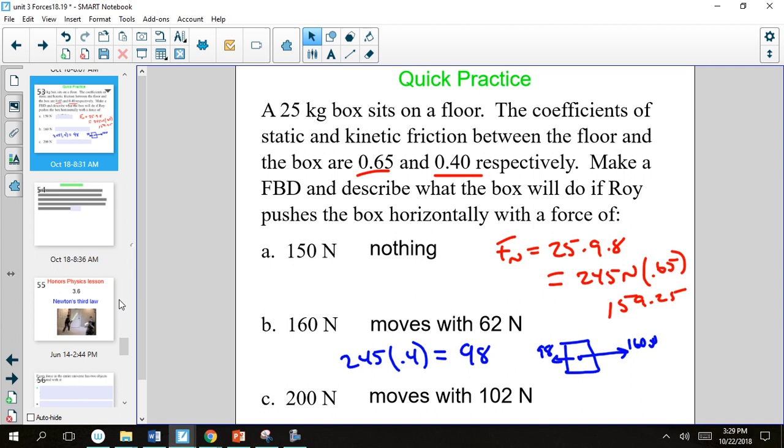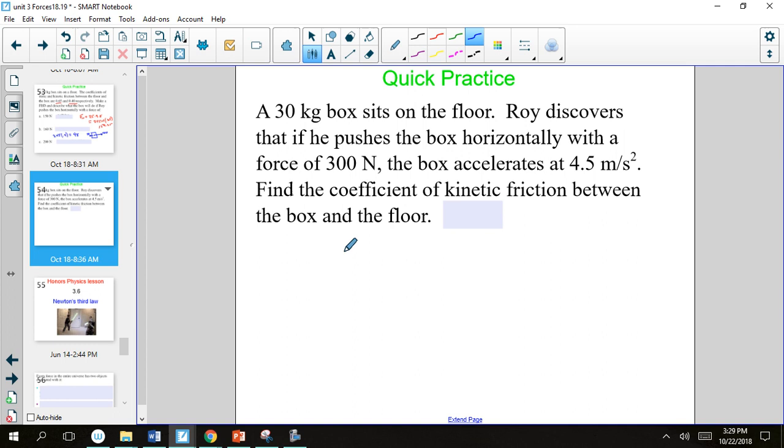One more quick problem. Let's say we have a 30 kilogram box sitting on the floor, which means our normal force is the same as our force of gravity, so 294 newtons. If Roy discovers that he pushes the box horizontally with a force of 300 newtons, the box accelerates at 4.5 meters per second squared. Find the coefficient of kinetic friction between the box and the floor.